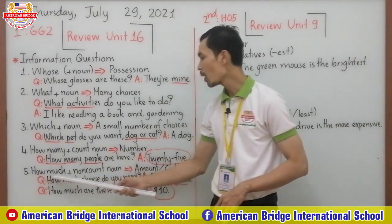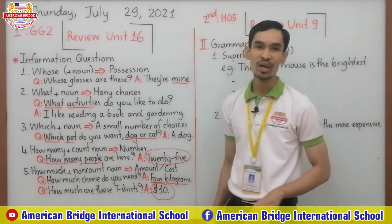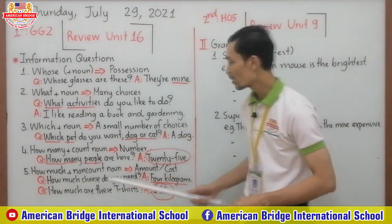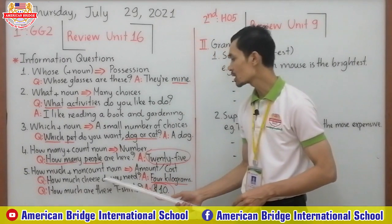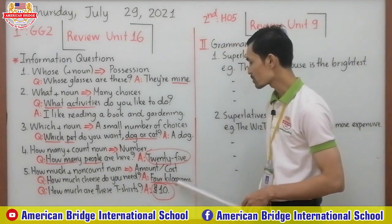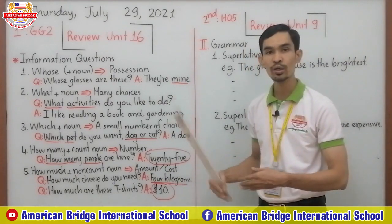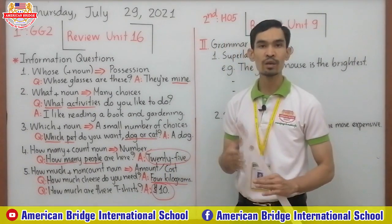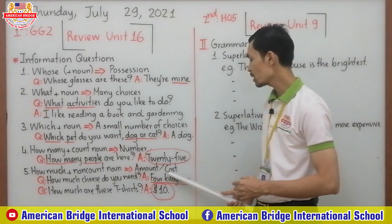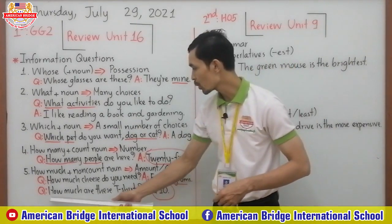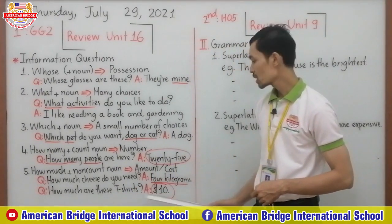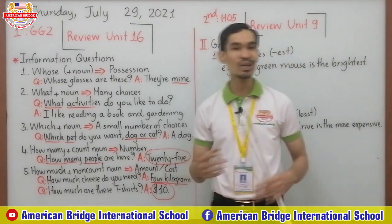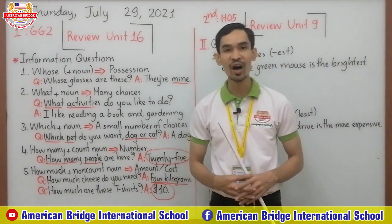Number five: how much plus non-count noun — to show amount. For example: 'How much cheese do you need?' — 'Four kilograms.' Four kilograms is the amount. Also, how much without a non-count noun is used to ask about cost or price. For example: 'How much are these T-shirts?' — 'Ten dollars.' Ten dollars is the cost.